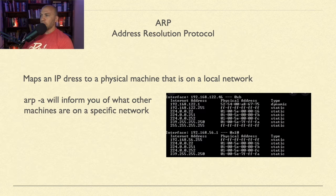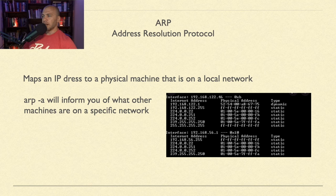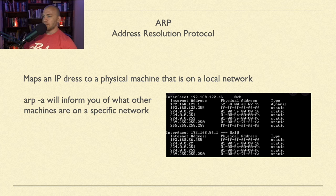ARP — Address Resolution Protocol — maps an IP address to a physical machine on a local network. You'll see this a lot in the certification process. The command arp -a is one you'll use when you have remote code execution on a Windows machine — it shows the ARP table, revealing other machines on the network that you can potentially attack next.